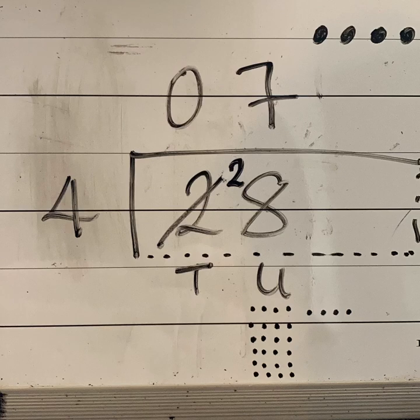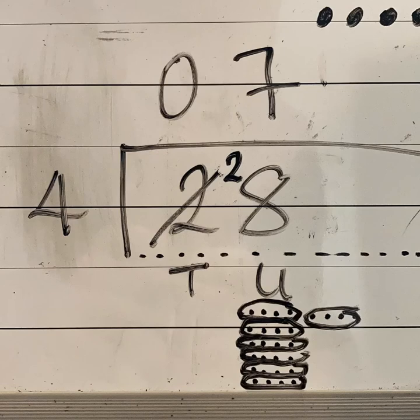Now there is actually a way we can check this. Remember those little dots that we did underneath our units column? Now they're in groups of 4, so we can just circle groups of 4. Now literally all I've done is circle those groups. You can see 1, 2, 3, 4, 5, 6, 7 groups. 28 divided by 4 equals 7.